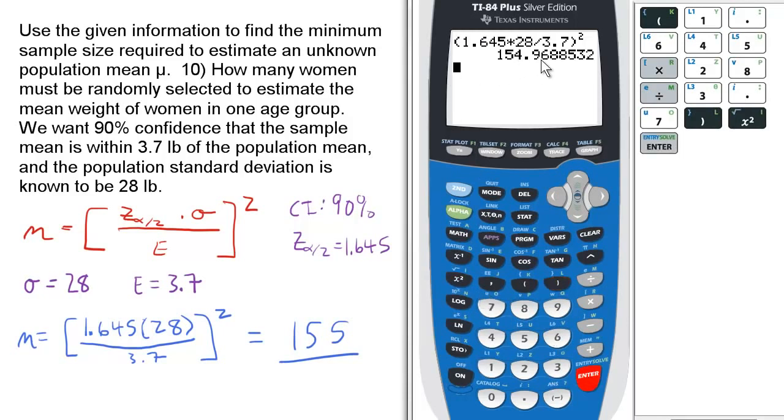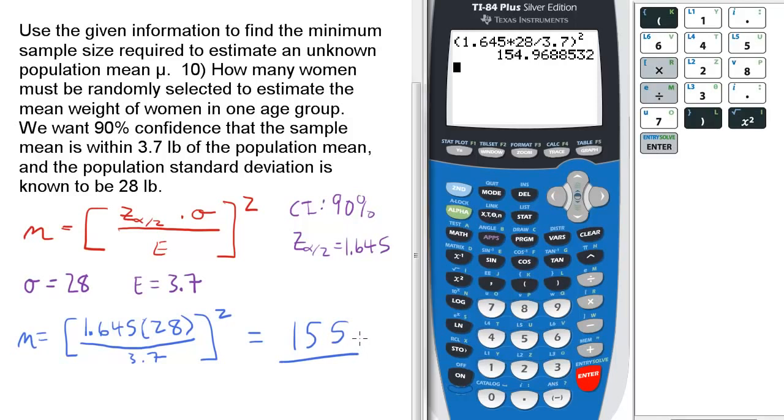That's 154.968, but since we need an integer value, whenever we calculate a minimum sample size, we have to round that up to 155.